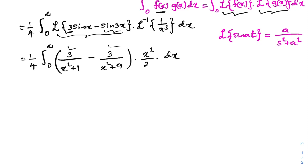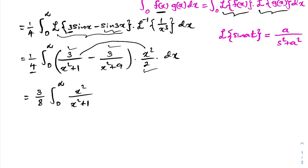The factor 3 is common, and combined with the 1/4 and the 1/2 from the inverse Laplace transform we get 3/8. So we have 3/8 times the integral from 0 to infinity of x²/(x² + 1) − x²/(x² + 9) dx.